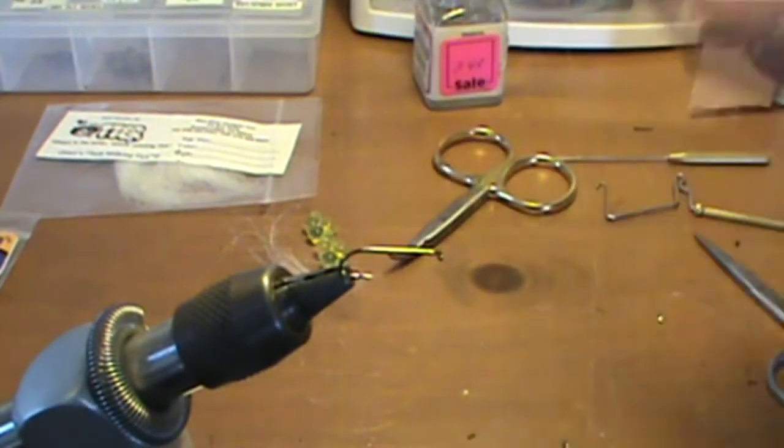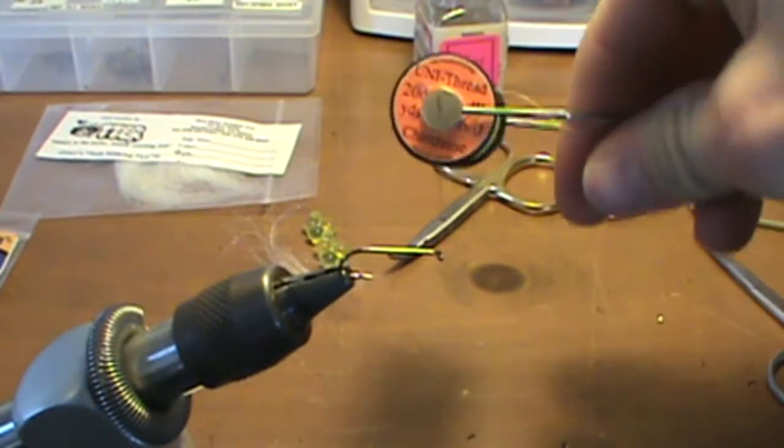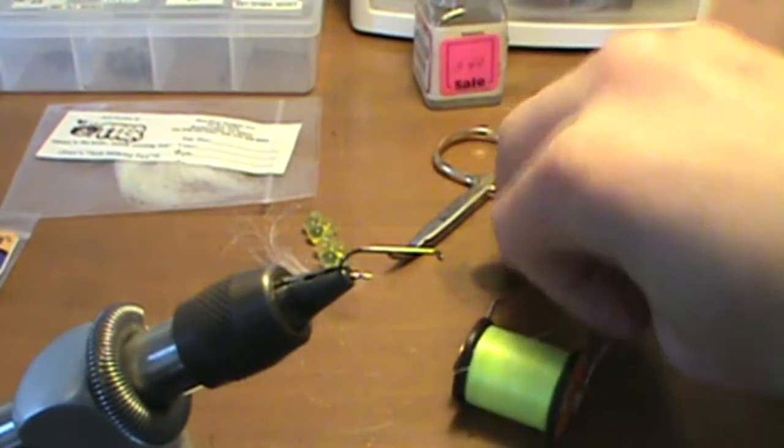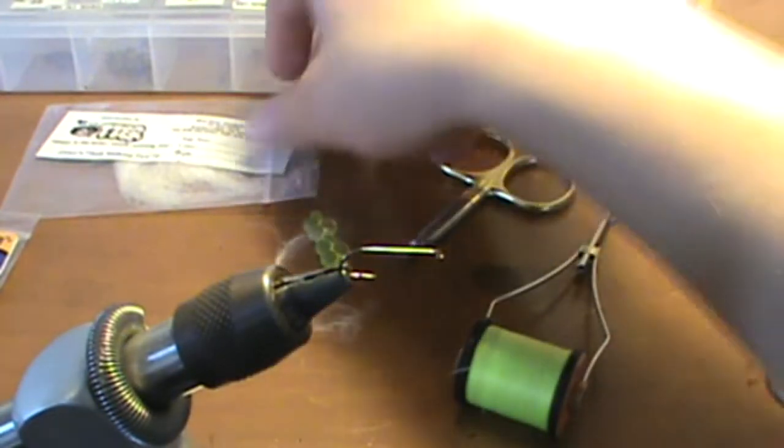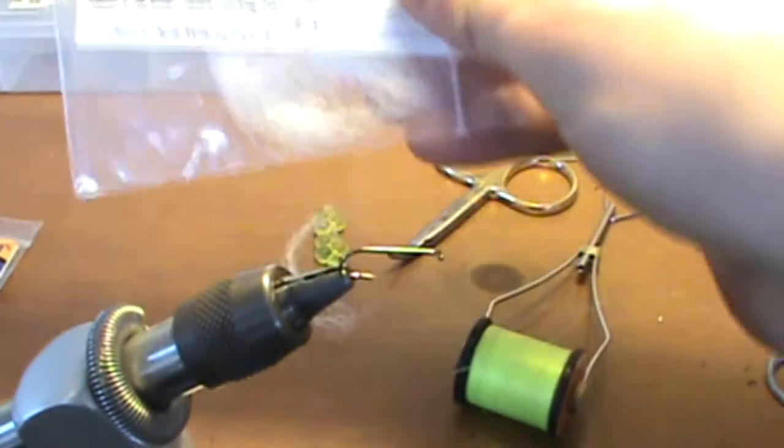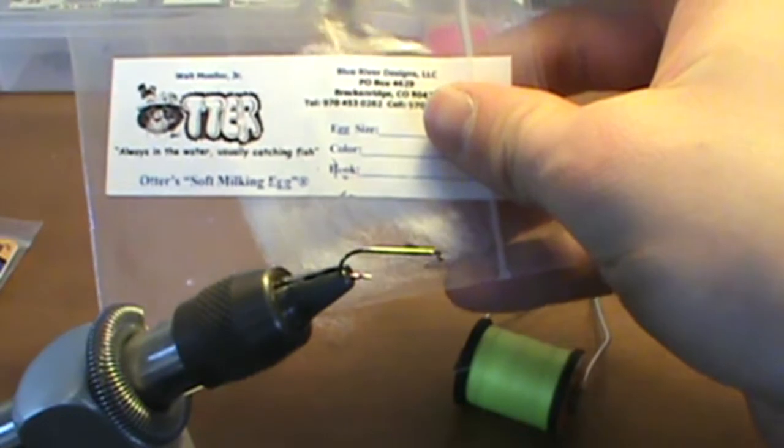For this fly you're going to need some green 6-0 thread and some of this Otter's soft milking egg material that comes in a package like this.